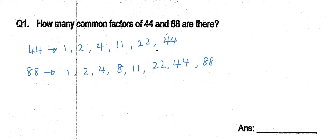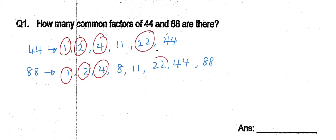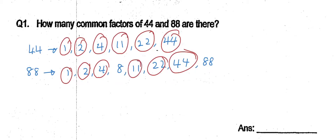which means these numbers must be in both 44 and in 88. So we have 1, 2, 4, 22, and 44 — as well as 11. How many common factors? So the total number is 6.